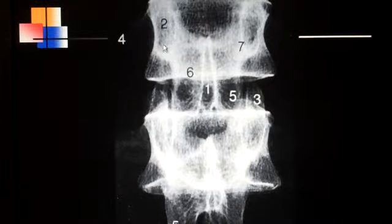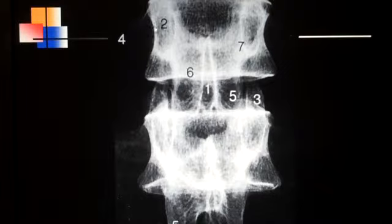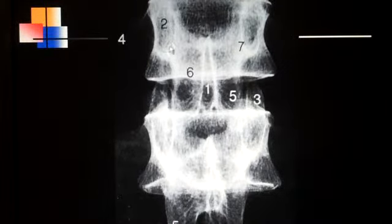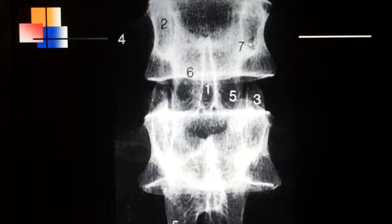Number two is labeling the pedicle. The pedicle is all of this circle right here — on this side and on the other side as well.